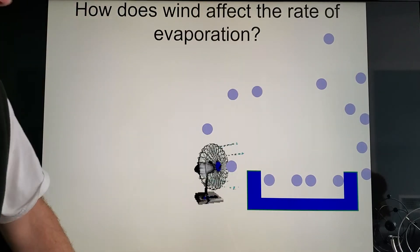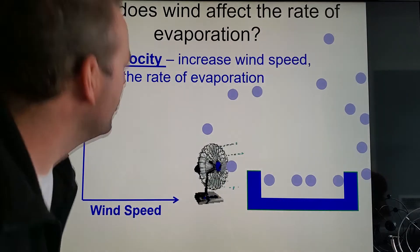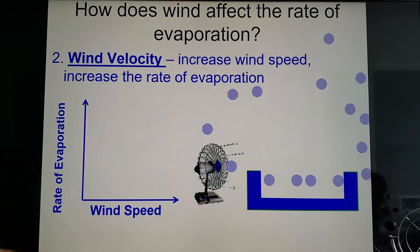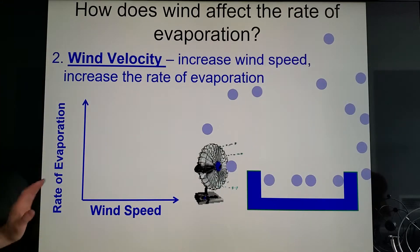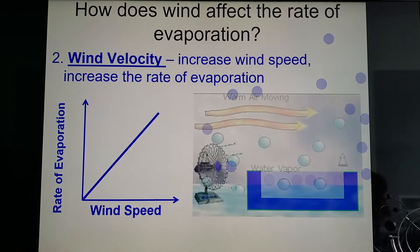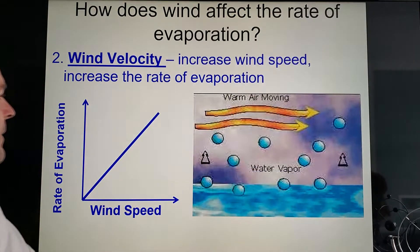So wind velocity, the faster it is of course the greater the rate of evaporation. What does that graph look like? Well, if you said direct once again, you are right on the money. That is another direct relationship.